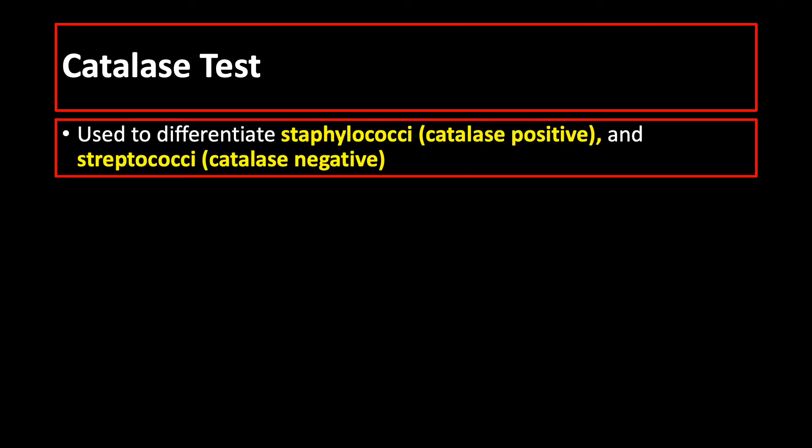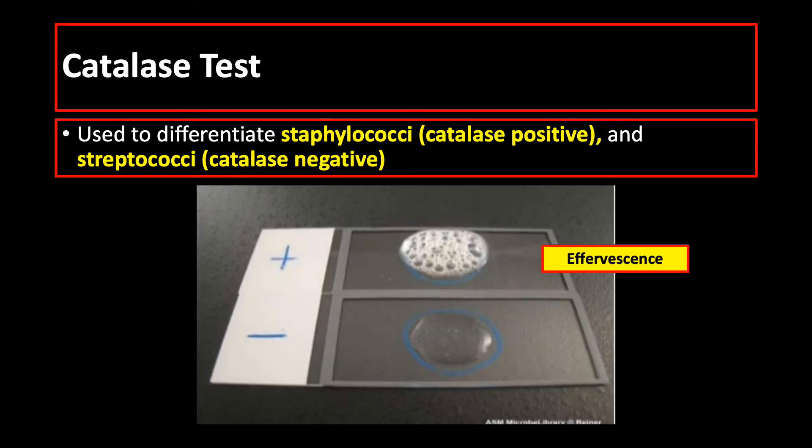Now, if you get a colony of bacteria and do gram staining and what you get is gram-positive cocci, you need to identify whether it is Staphylococcus or Streptococcus. The test that you will employ is the catalase test. Catalase test will yield catalase positive if it is Staphylococci, or catalase negative if it is Streptococci. This picture shows an example of catalase positive, showing effervescence or bubbling as the positive result.